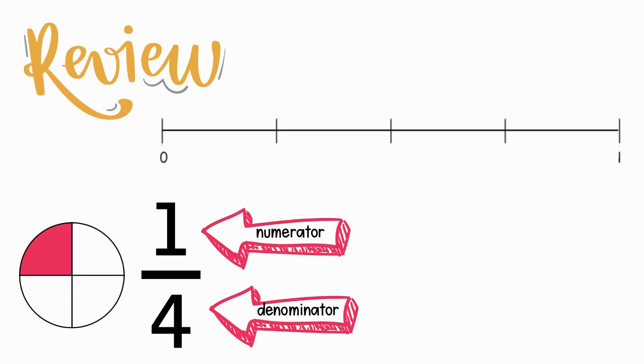So, if we have a number line from zero to one, and it's split into four equal parts, what's the denominator? The denominator is four. We call those fourths.